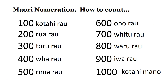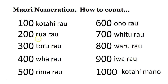Let's look at the numbers from 100 to 1000. Number 100, we say kotahi rau. Number 200, rua rau. So rau is 100, and rua is two, so two hundreds.